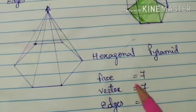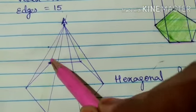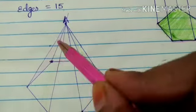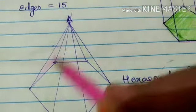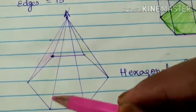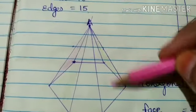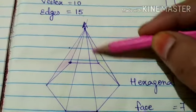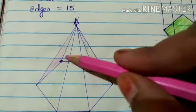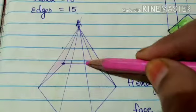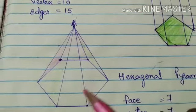Now we will see the hexagonal pyramid. So as you can see how many faces are there. This is a triangular prism — this one is one triangle, 1, and from here it is 2. This one is 3, it is 4, this one is 5 — the green one, it is also a triangle, 5. Then you can see here it is 6 and below here it is 7.